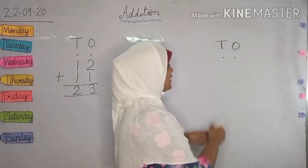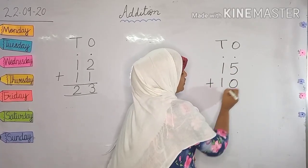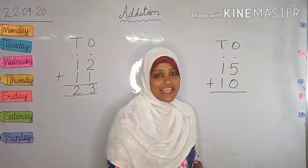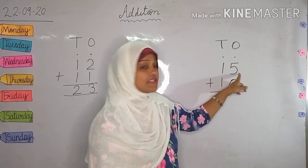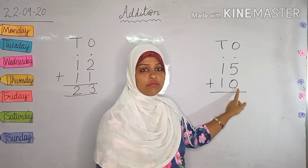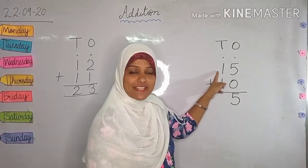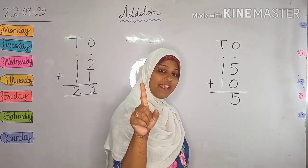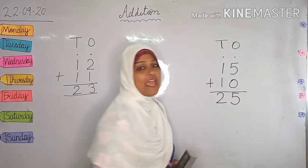Now let's try one more sum. Here I will write 15 plus 10. Now, first rule: we need to add the numbers which are below the 1s family first, and then we move to the 10s family. Here the number is number 5. But remember, whatever number is on the top, if it is added to number 0, the answer is going to be the same number as on top. So 5 plus 0 will become 5. Now let us move to the 10s family. Which number is this? Yes, 1. Let us keep this 1 in our mind and count 1 on our finger. After 1, it's 2. That's right. The answer is 2 and 5 — 25. Lovely.